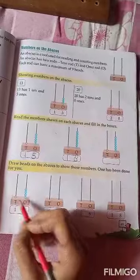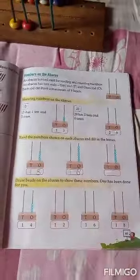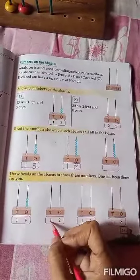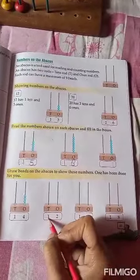First, you will make a 10s bead. Then, you have to make a 1 bead. On 1 side bead. Now, see. First is 10. What is written? Which number is written? Come on, tell me.